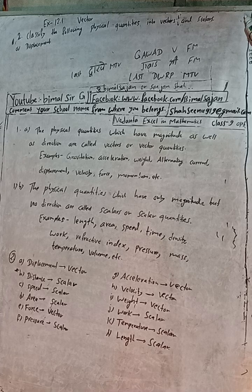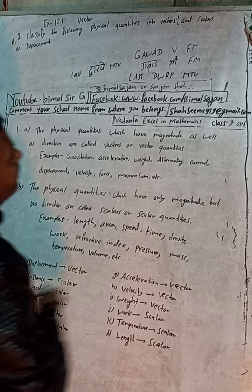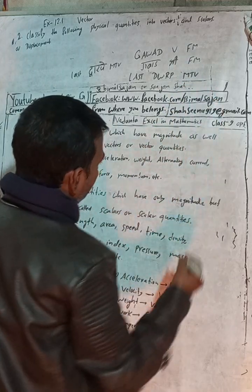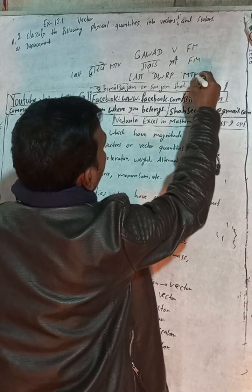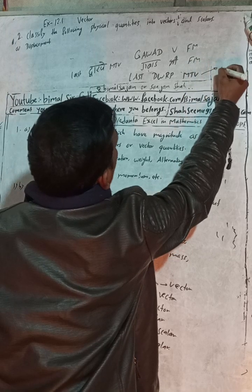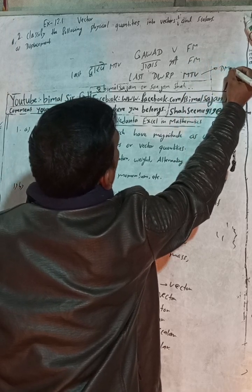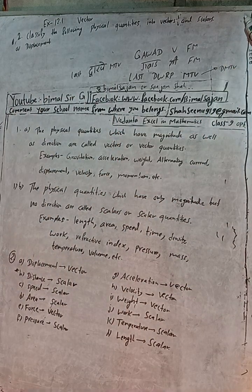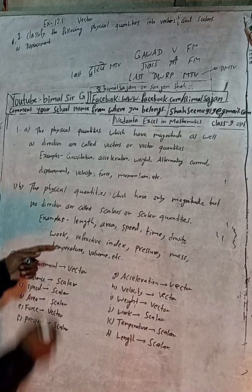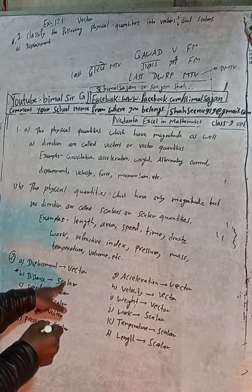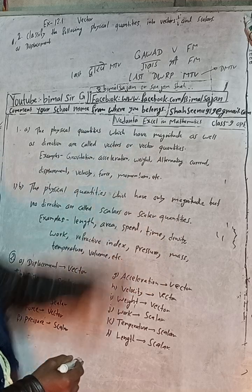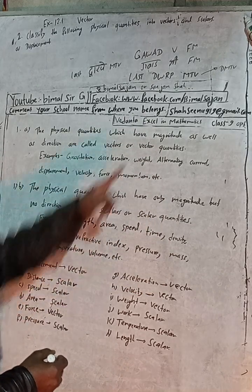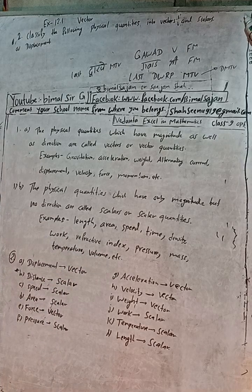The mnemonic is DMT — D, M, T, V. Remember: D, M, T, V. If you want to recall distance, mass, temperature, volume, and other scalar quantities — DMT helps you remember them. Mass, temperature, and pressure are all scalar quantities you can group this way.